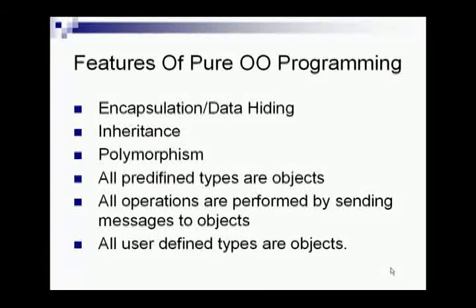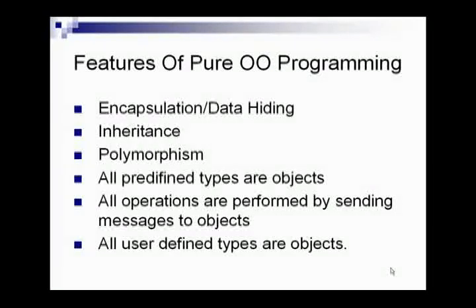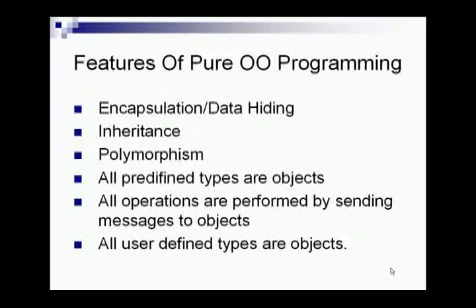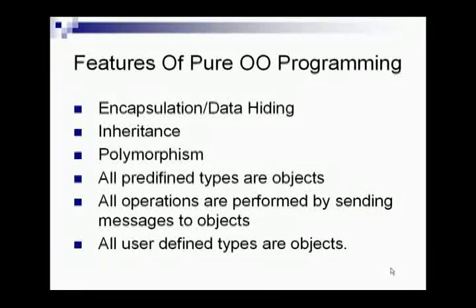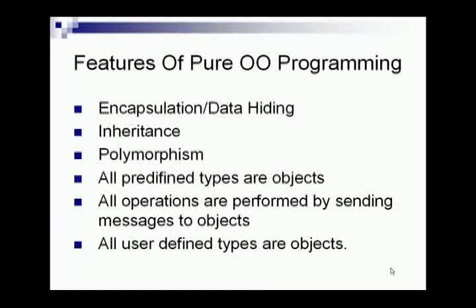The next feature is that all operations are performed by sending messages to objects. For example, adding two numbers becomes a normal statement in primitive languages. But in pure object oriented languages, each step is done by sending messages to objects — those numbers become objects, the plus operation becomes another object, and it goes to the addition object which takes the two numbers as parameters and gives the output.